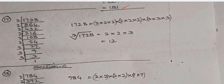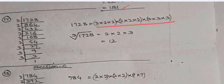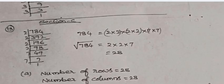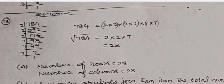Question 17 solution — cube root of 1728: Factorize by dividing by 2 six times and by 3 three times. Group the factors into sets of three — 2×2×2 and 3×3×3 — taking one number from each group gives 2×2×2×3 = 12. Therefore, the cube root of 1728 is 12.